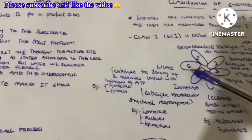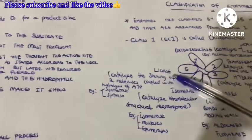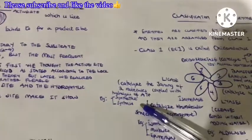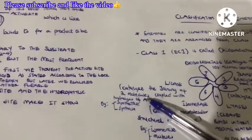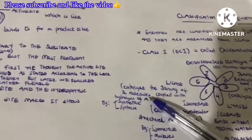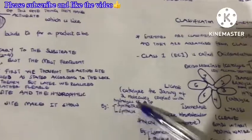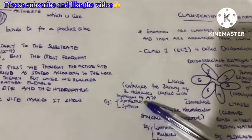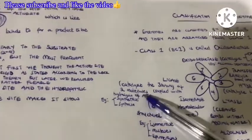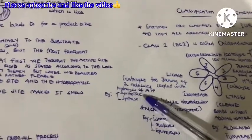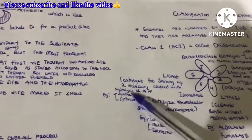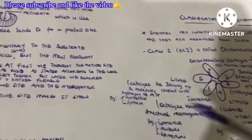The sixth class is the ligases. They catalyze the joining of two molecules using energy in the form of ATP. Examples include synthetase and synthase. The difference between synthetase and synthase is that synthetase requires and uses ATP directly, while synthase does not use ATP directly.